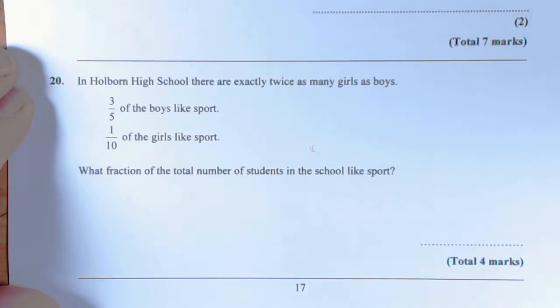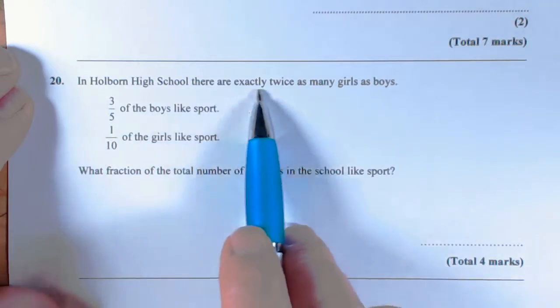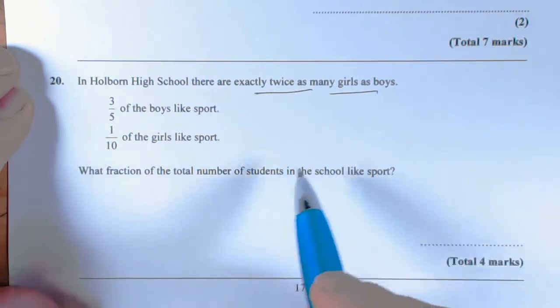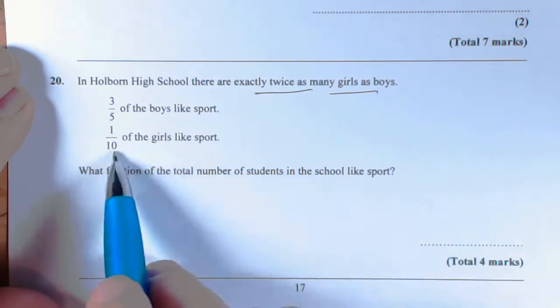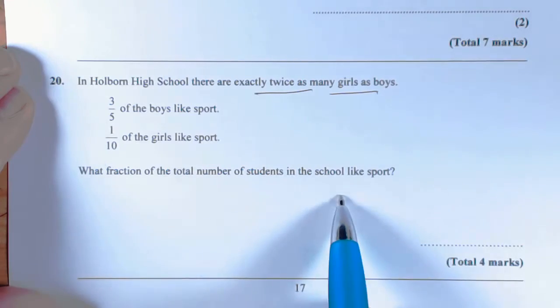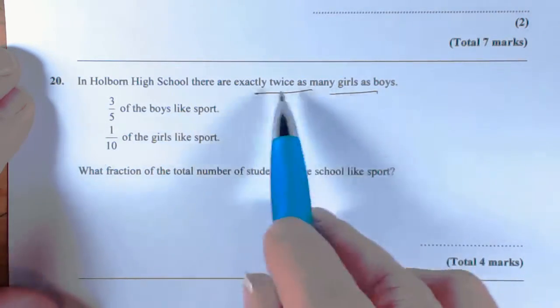Okay, so we see a question like this with lots of information. In Holborn High School, there's exactly twice as many girls as boys, three-fifths like sports, one-tenth like something else. What fraction of total? They're not giving us a number for the total number of students in the school.